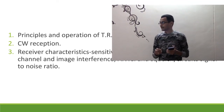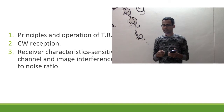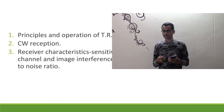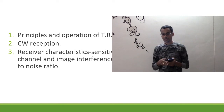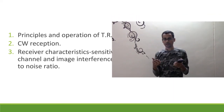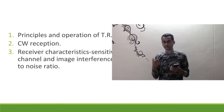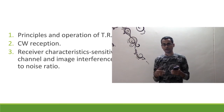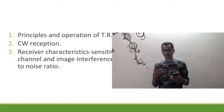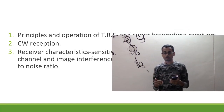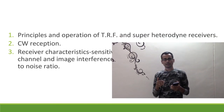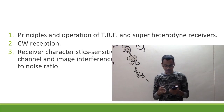We also cover receiver characteristics such as sensitivity, selectivity, fidelity, adjacent channel and image interference. These are important because when you go to buy a radio, they help you differentiate between a cheap brand and a very good brand. Or if you are building your own radio, they help you quantify the performance of your receiver. These terms are essential in order to understand how well your receiver performs.